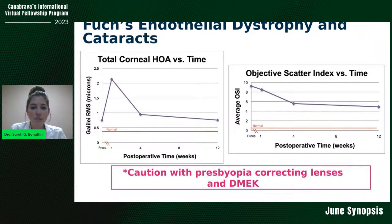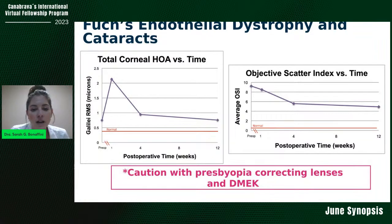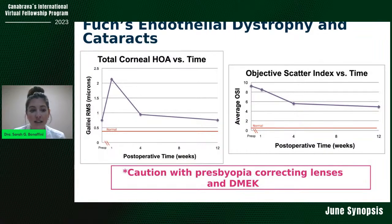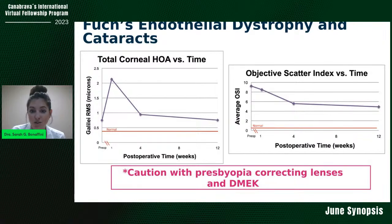Discussing corneal higher order aberrations over time — you can clearly see based on these graphs that the objective scatter index (OSI) and total corneal HOA increase. You want to be very cautious with these patients when considering presbyopia-correcting lenses, because these patients have pathology that could limit visual acuity and corneal higher order aberrations can definitely impede quality of vision, even if everything is on target.